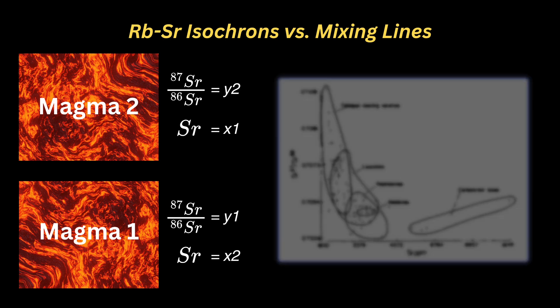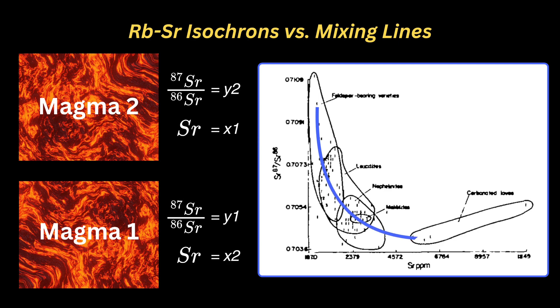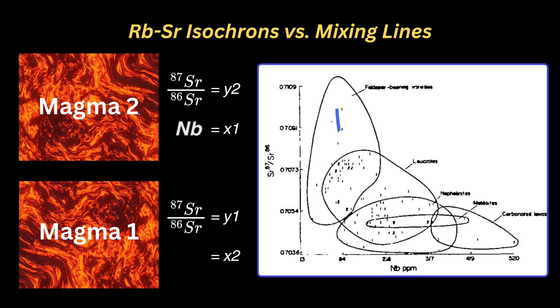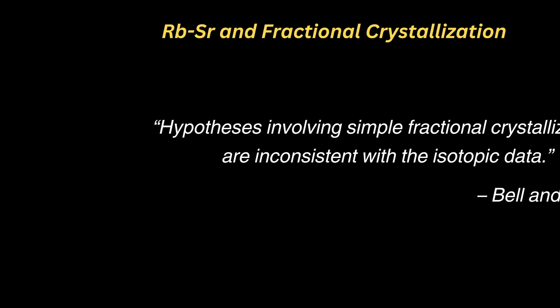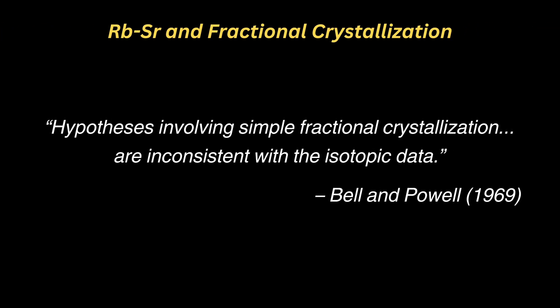So what did Bell and Powell find in their data? Oh, look — it's a hyperbola. So when Paul Guillaume said they wrote it off as a mixing line without evidence, what he meant was he chose to ignore their evidence. By the way, you can repeat this exercise with the other elements. Here's 87-86 versus niobium and versus zirconium — yep, looks like mixing to me. Bell and Powell also noted that hypotheses involving simple fractional crystallization are inconsistent with the isotopic data, which was another way of supporting their interpretation of a mixing line, but this requires more explanation.